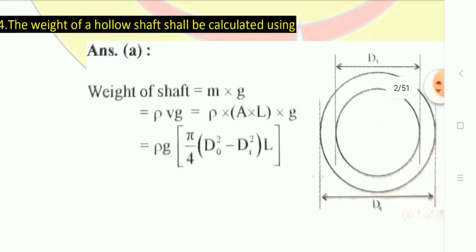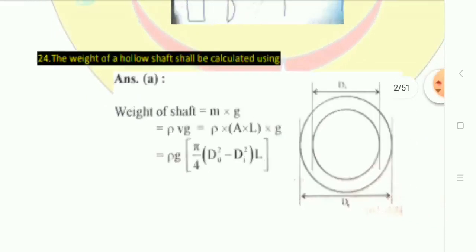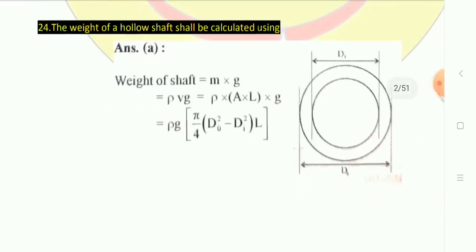The weight of the hollow shaft is calculated using the formula: weight = ρ × V × g. The volume is expressed as length × area, where area = π/4 × (outer diameter² − inner diameter²). So the weight of the shaft uses this formula.